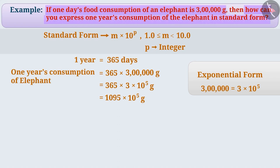We have to write the number in standard form. Therefore, we will place the decimal point on the rightmost side of 1095 and move it 3 places to the left. Since we have moved the decimal point 3 places to the left, we will multiply the number by 10 to the power of 3 to keep the value of the number the same. So, one year's consumption of the elephant is equal to 1.095 into 10 to the power of 3 into 10 to the power of 5 grams.